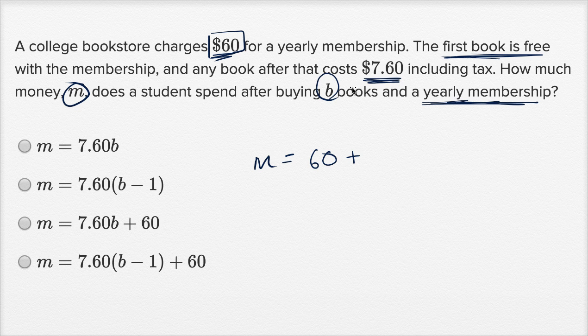So it might be tempting to say, I'm going to do $7.60 per book and then multiply that times B books. So this right over here might be very tempting. We have to remember something: the first book is free.